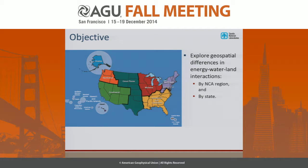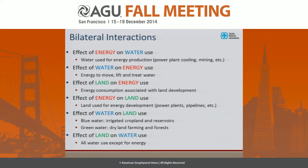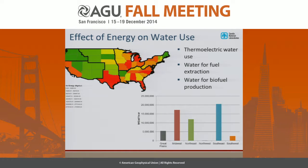First, by the NCA regions — the different colored regions there, the six different regions. And then also by state. We have data to do county, but that gets a little too detailed at this point. In a perfect world, we'd like to do a full multilateral analysis across all of these different sectors. But in order to get our hands around this, it makes it easier to break it down by looking at the various bilateral interactions to start with — things like the effect of energy on water use, and the effect of water on energy use, and so forth. I want to go through each of these six different bilateral interactions, and look at both the spatial pattern at the state level, as you see up there in the top left, and also aggregated at the NCA region down on the bottom right. In each case, I list the kind of data that we use to assemble these maps.